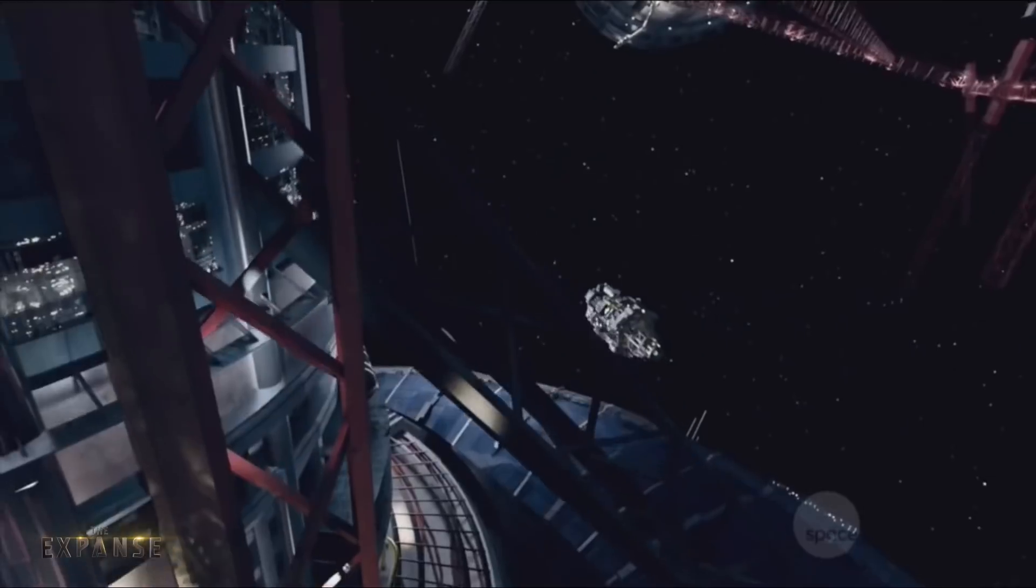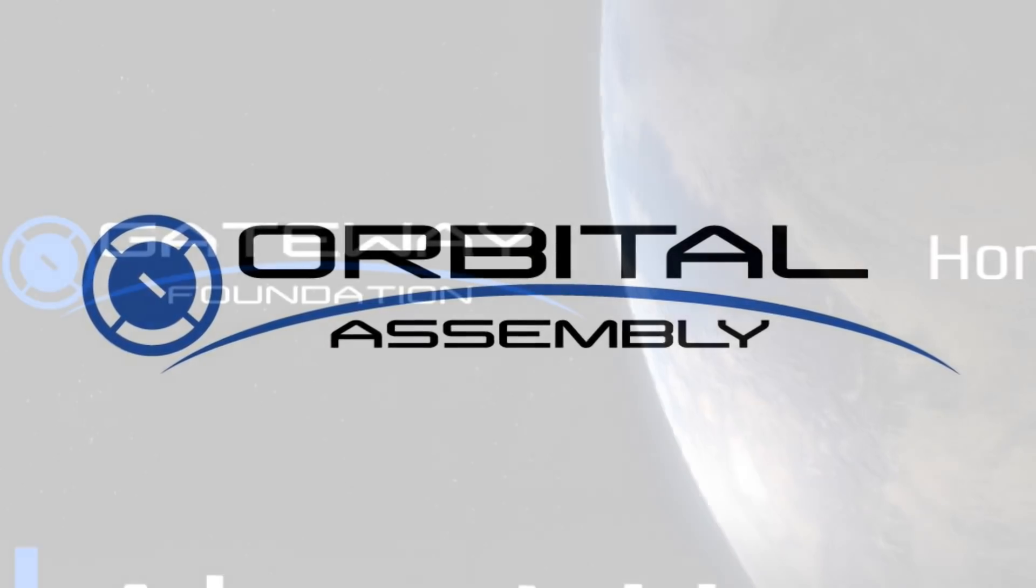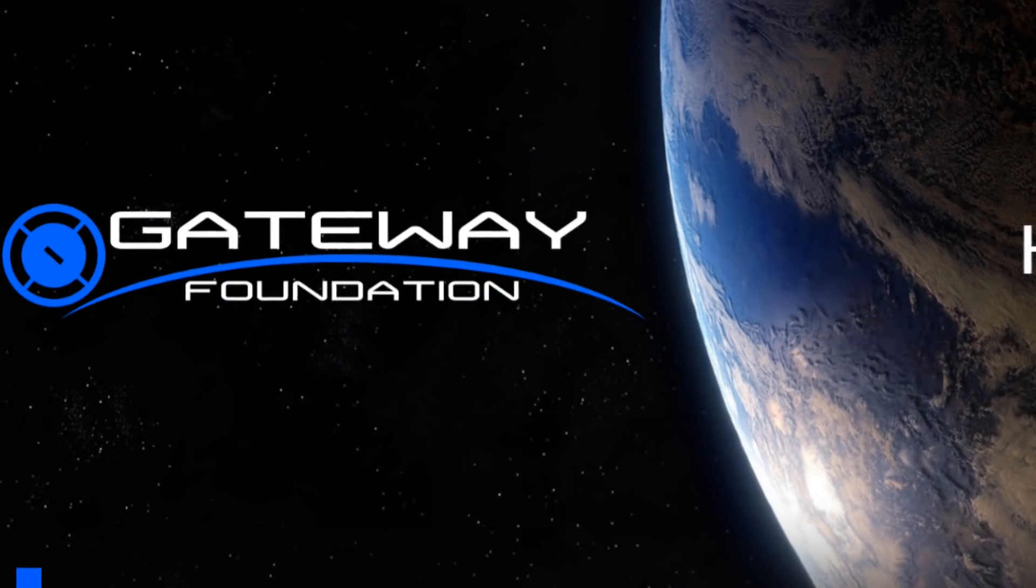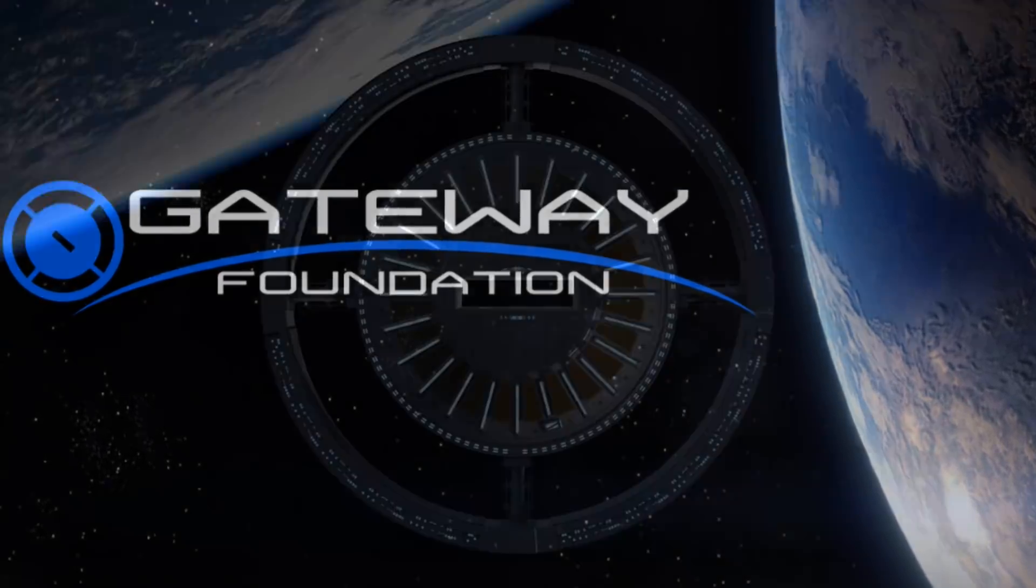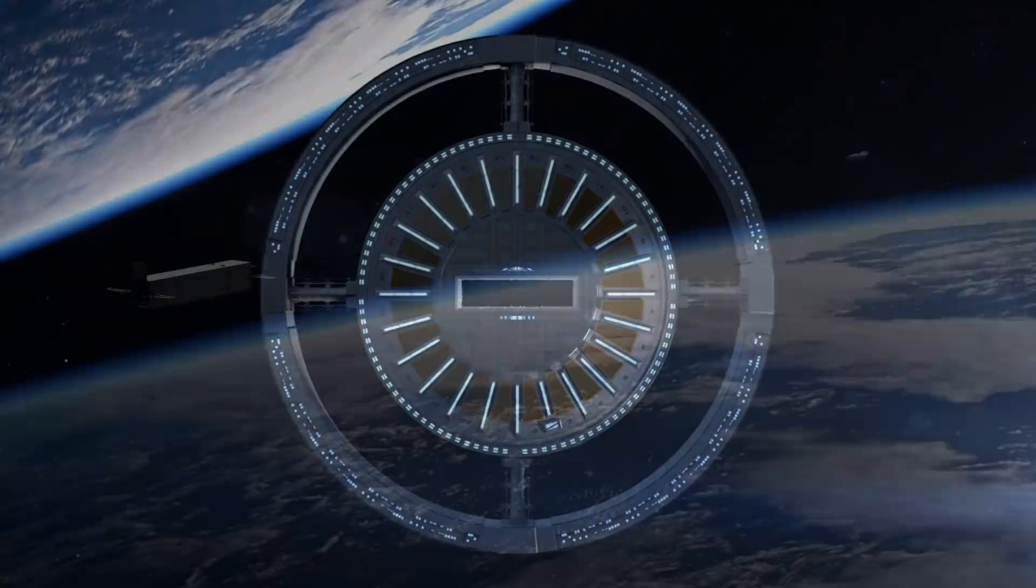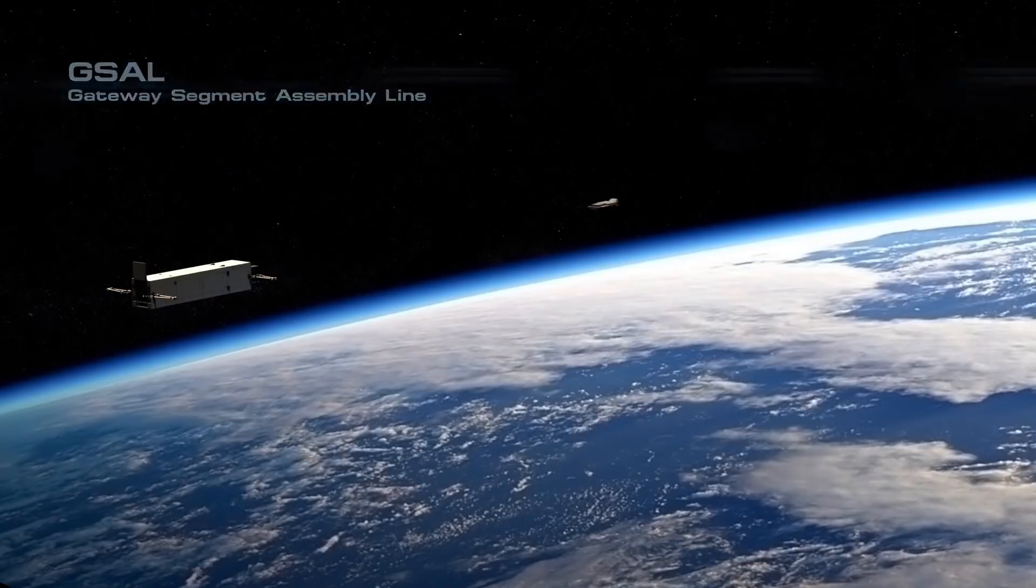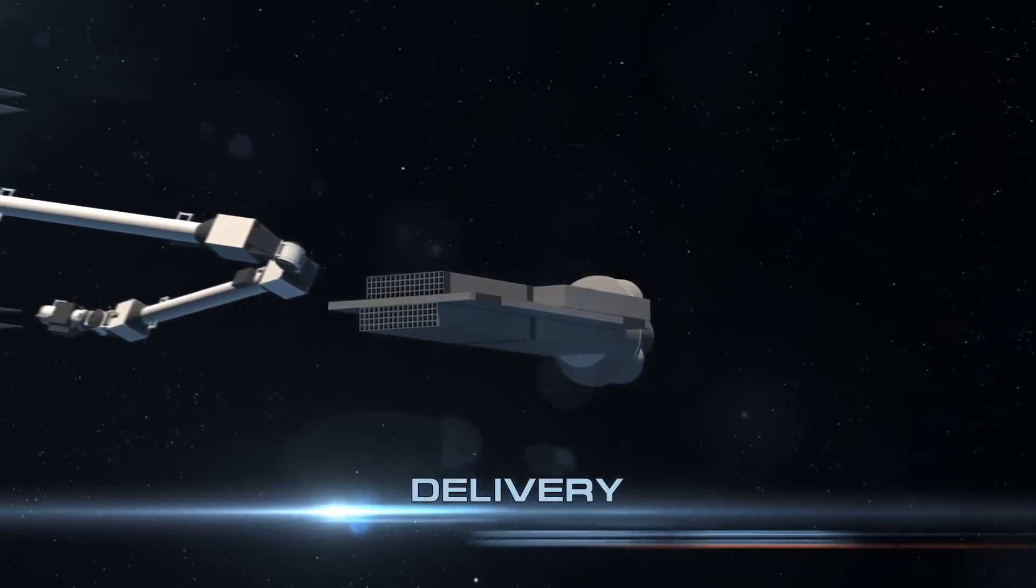And this takes us to the first company, Orbital Assembly. Orbital Assembly is the business arm of the Gateway Foundation, which is the organization behind the mega spaceport, the Gateway. But more on that in a bit. So Orbital Assembly aims to be the first turnkey space construction company designed to build any structure in space quickly and with precision.